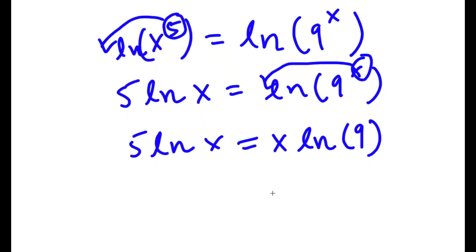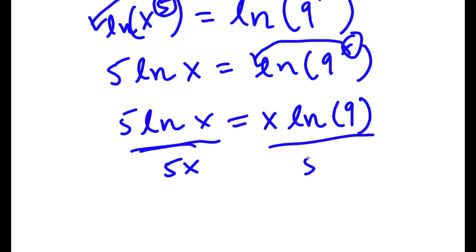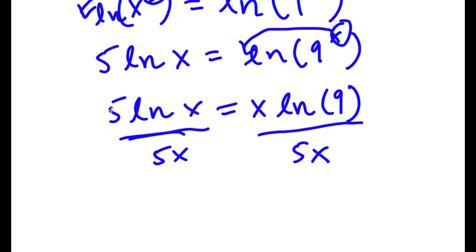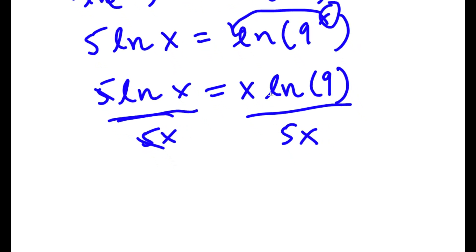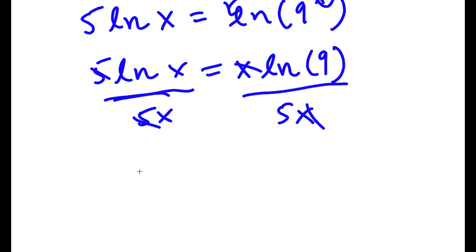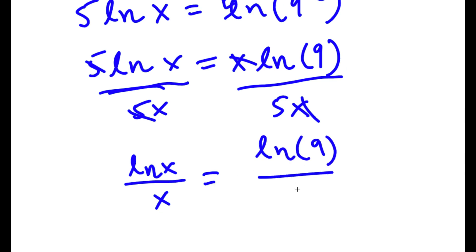So now what I'm going to do is divide both sides by 5x. The 5s cancel out and the x's cancel out, so now I'm left with ln x over x is equal to ln 9 over 5.